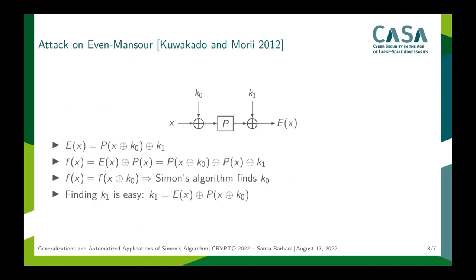So, why do we care about Simon's Algorithm? Well, in 2010 and in 2012, Kuwakado and Morii presented attacks against the 3-round Feistel and the Even-Mansur construction. Here, I explain the attack against Even-Mansur. The Even-Mansur construction consists of two secret keys, k0 and k1, and a public permutation p.